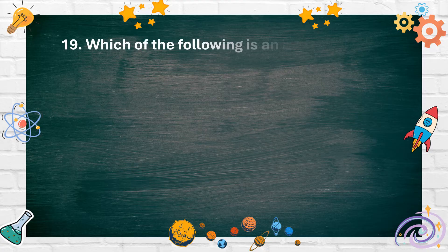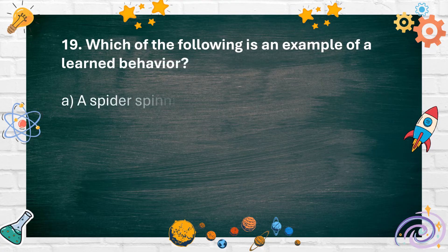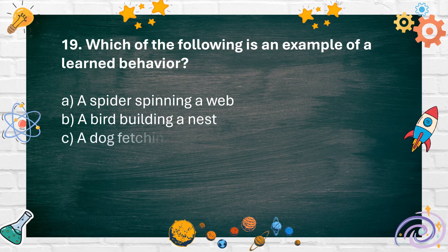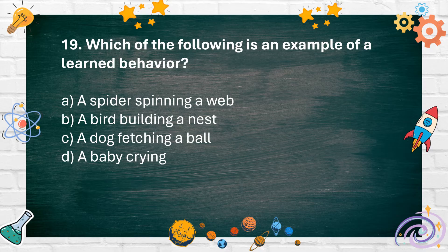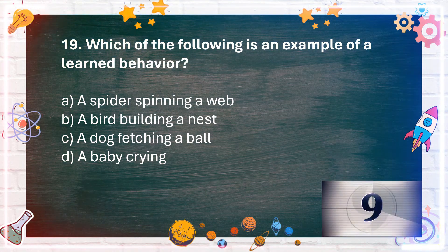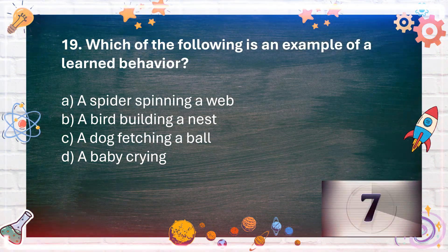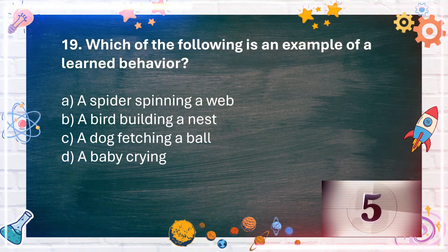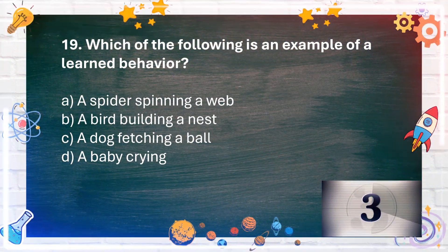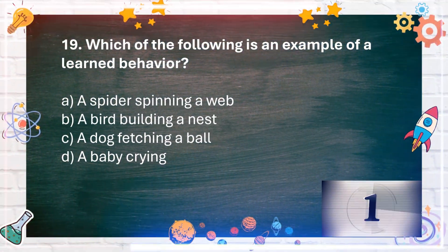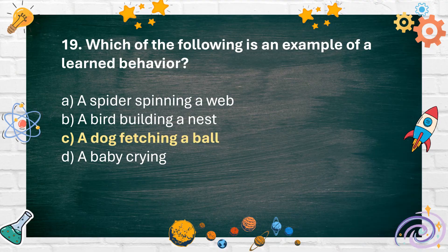Number 19. Which of the following is an example of a learned behavior? A. A spider spinning a web. B. A bird building a nest. C. A dog catching a ball. D. A baby climbing. The answer is C. A dog catching a ball.